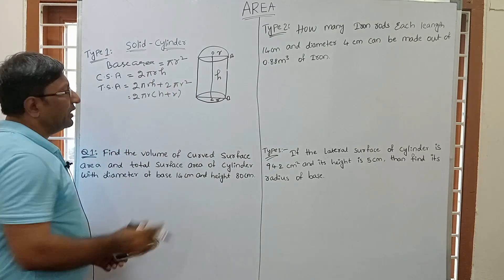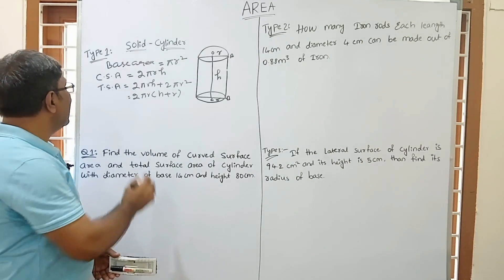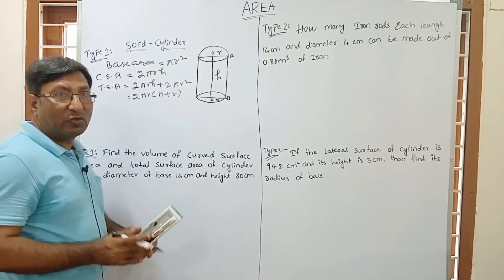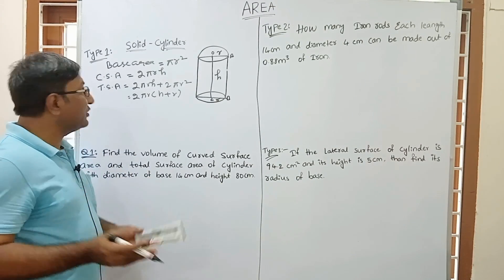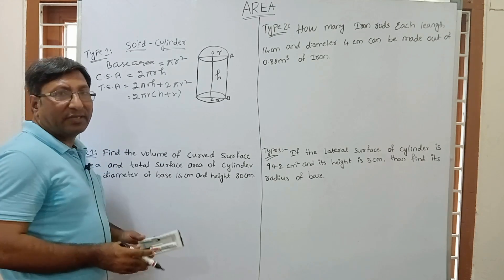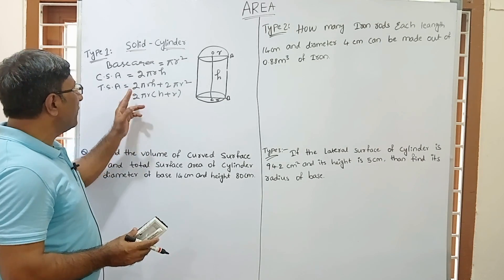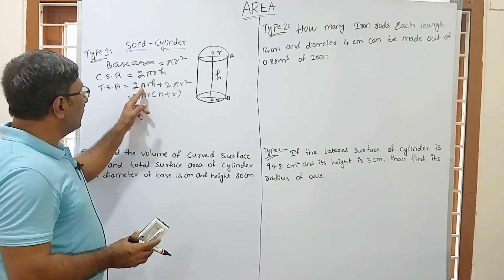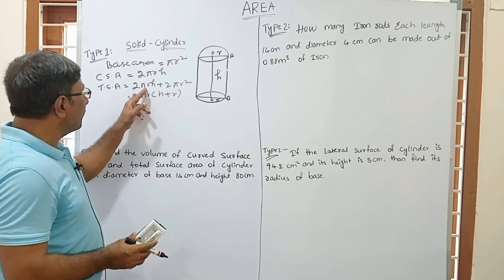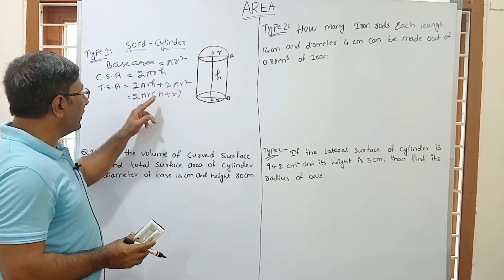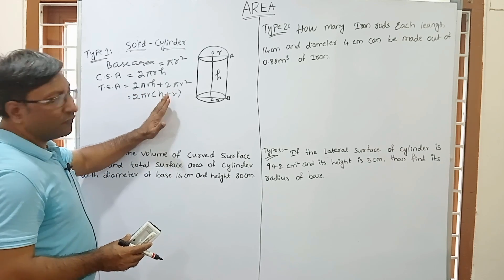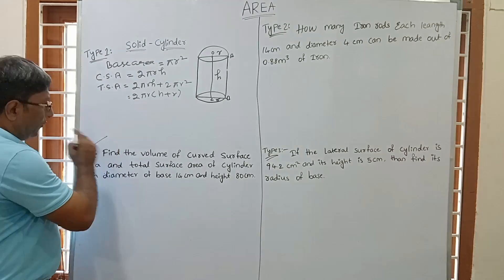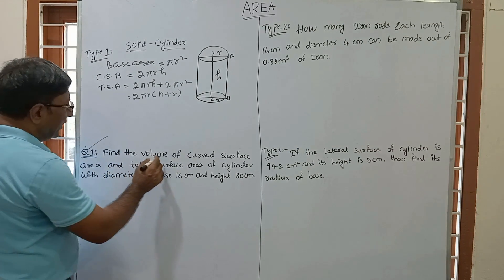So base area of cylinder is π R². Curved surface area of cylinder is 2πRH. Total surface area of cylinder is 2πRH + 2πR², which can be written as 2πR(H + R). This is the standard form.